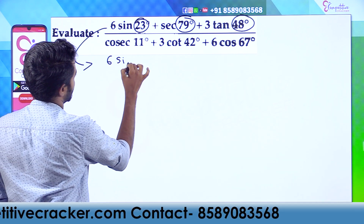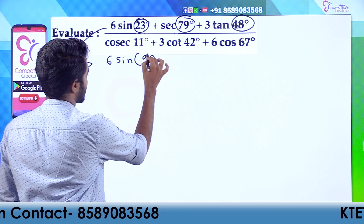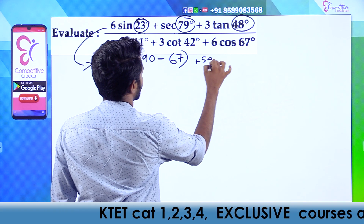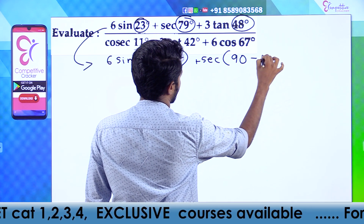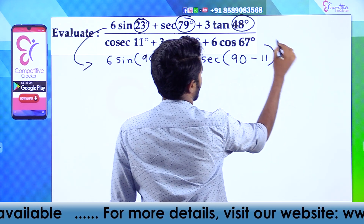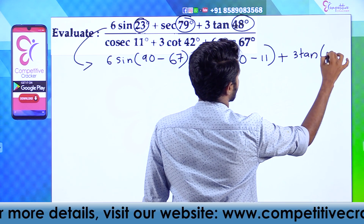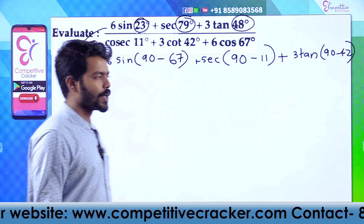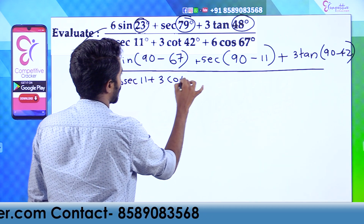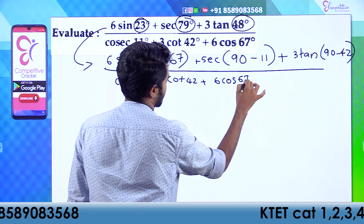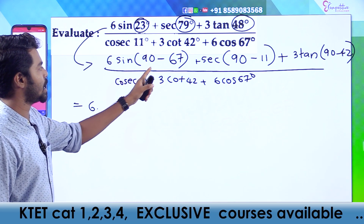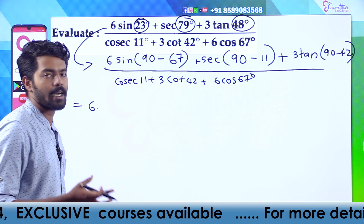For this, note that 6 sin 23° relates to 90 - 67°, and 3 tan 48° relates to 90 - 42°. Using complementary angle identities: sin(90 - x) = cos x and tan(90 - x) = cot x, the numerator and denominator terms pair up and simplify, giving the answer.